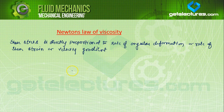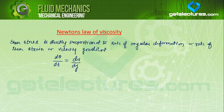We have seen in the last lecture that dθ/dt, the rate of shear strain, is equal to the velocity gradient du/dy. Newton's law of viscosity — what is the definition? Because in some exams, there are questions where you have two options: shear stress is directly proportional to the rate of angular deformation, or shear stress is directly proportional to the velocity gradient. We discussed that dθ/dt is equal to du/dy.